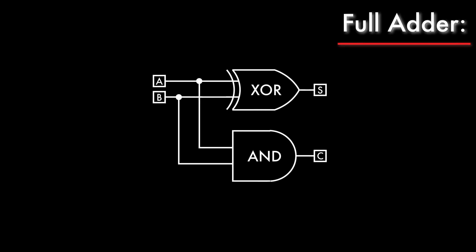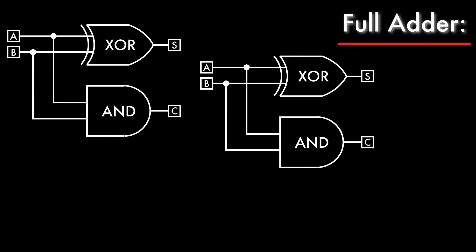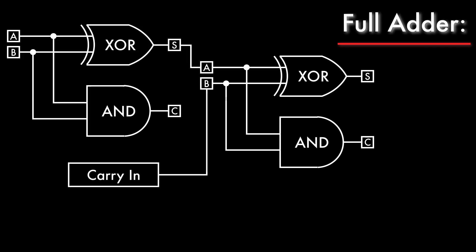To make a full adder, we need 2 half adders side by side. The first half adder adds the same 2 inputs A and B. The second one will add the sum of that to any carry input. So first we wire the sum output of the first half adder to the A input of the second half adder. Then we wire the carry input to the B input on the second half adder. The final sum of all 3 inputs — A, B, and carry in — will be the sum reported by the second half adder.